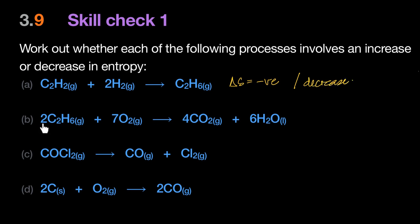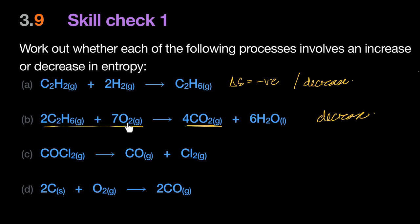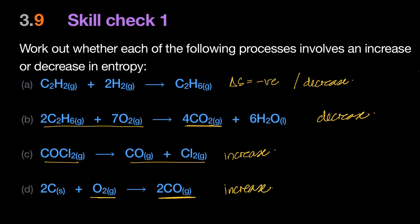In the second equation, nine moles of gas are becoming four moles of gas — a decrease in entropy. Number of moles of gas are the most important factor when gases are involved. In number C, one mole becomes two moles of gas — that's an increase in entropy. The last one also has one mole of gas becoming two moles — carbons are solid, so again the number of moles of gas is increasing, therefore entropy is increasing.